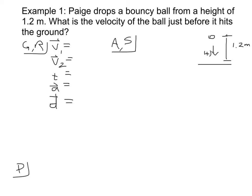We'll do a couple of quick examples. So this first one here, Paige drops a bouncy ball, and here, key word already, drops a bouncy ball from a height of 1.2 meters. What is the velocity of the ball just before it hits the ground? So we're looking for a velocity. So we can fill in our given information here. So the initial velocity, because it is dropped, is 0 meters per second.